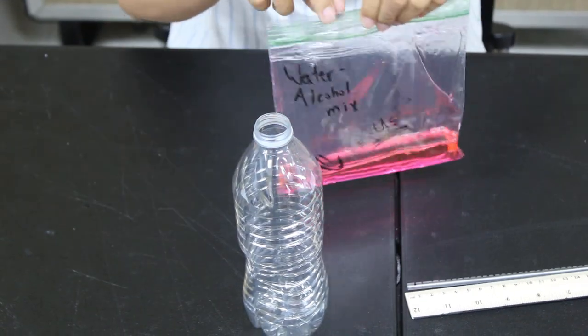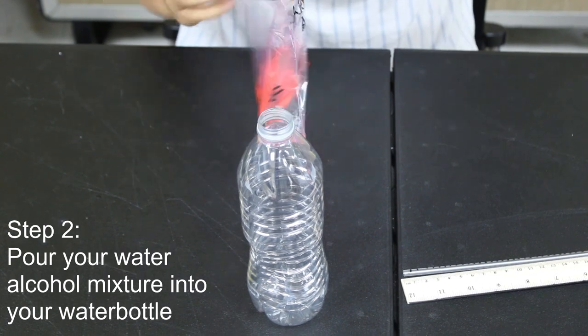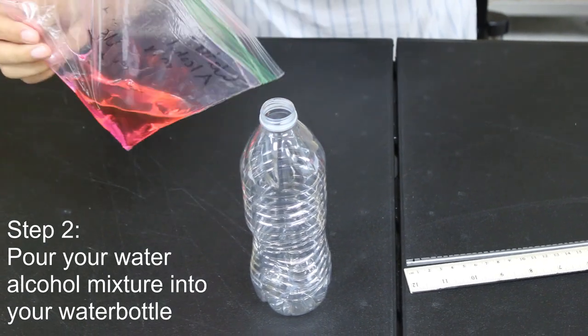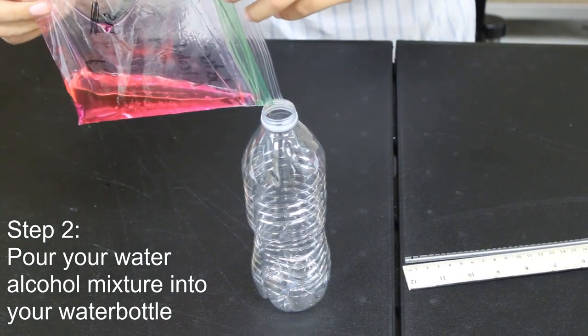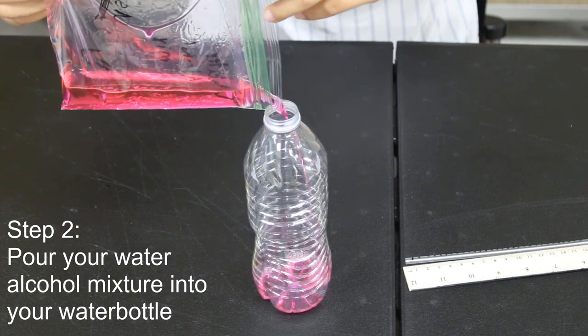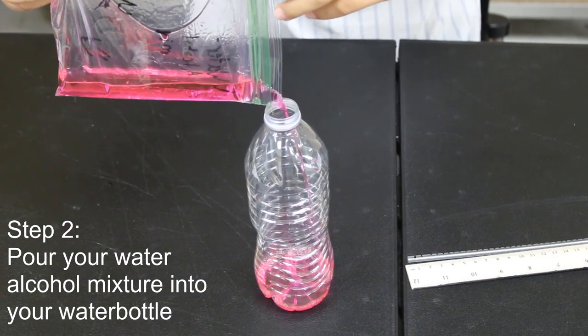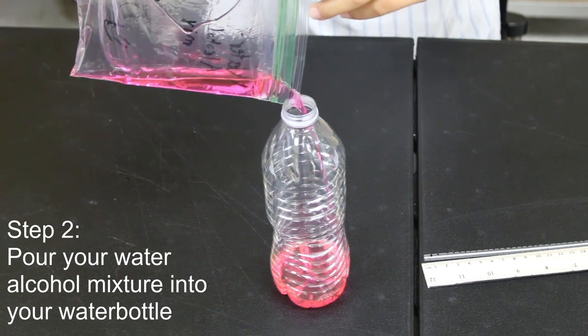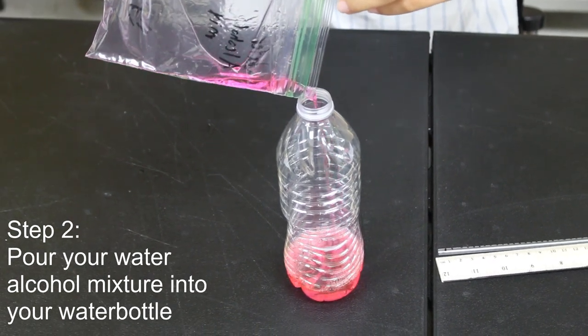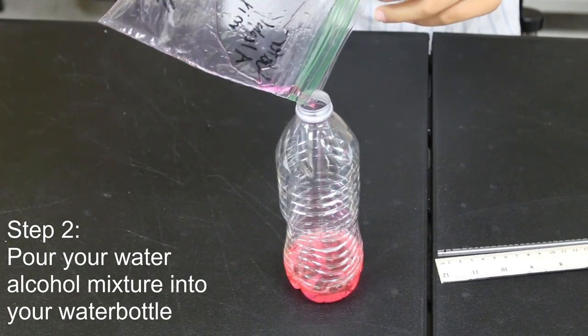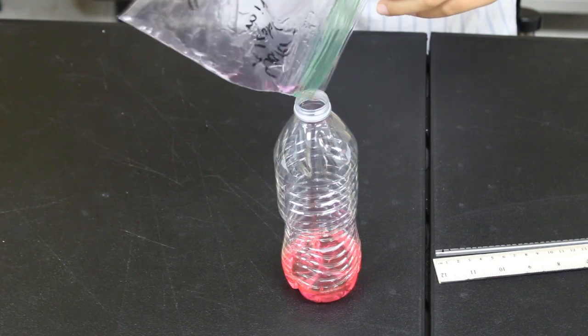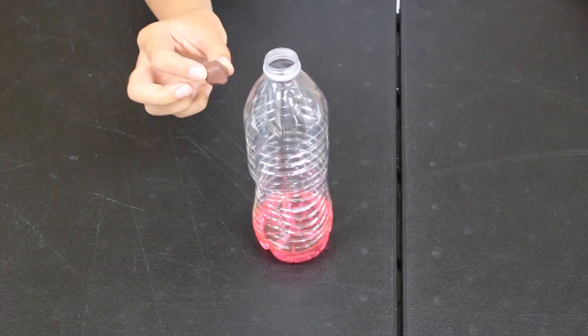Step two, go ahead and get that bag of water alcohol mix that we've labeled for you and pour that into your water bottle. You might need a funnel for this but as you can see in the video if you do it carefully out of the corner it should be able to go. Try not to spill any but if you do it's okay we all make mistakes. Go ahead and clean that up. You'll want to get all of that mix in there.